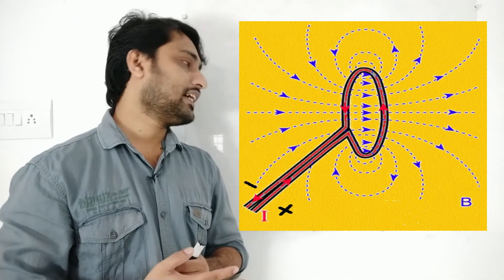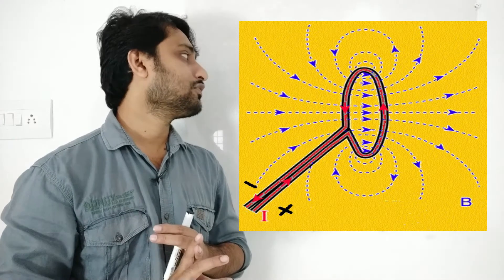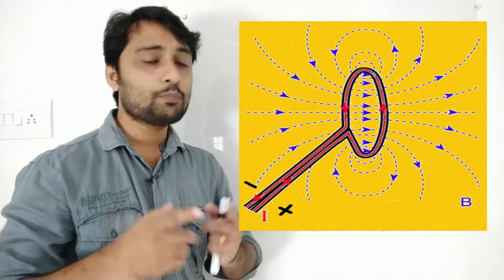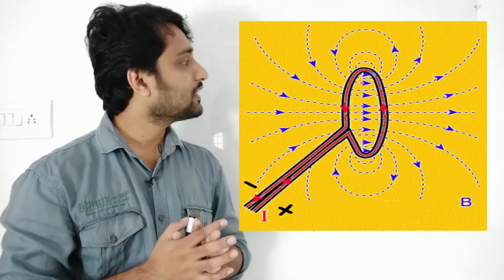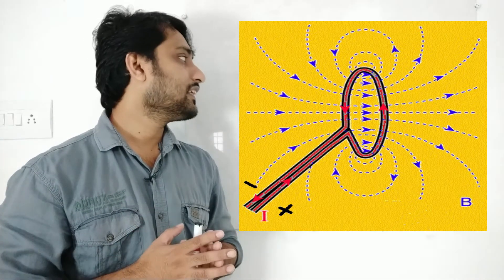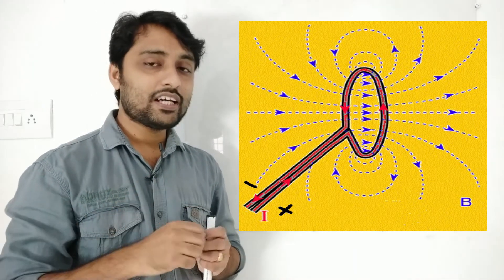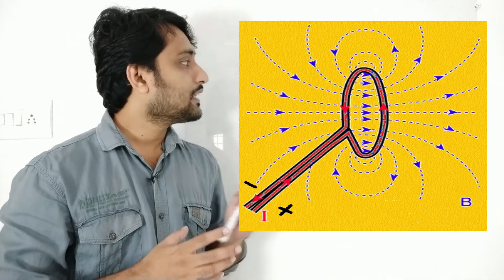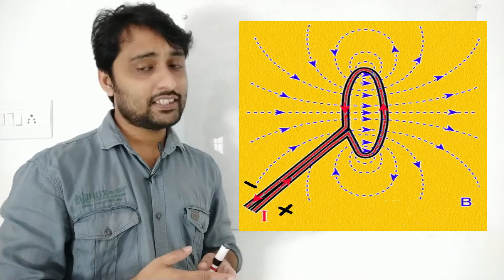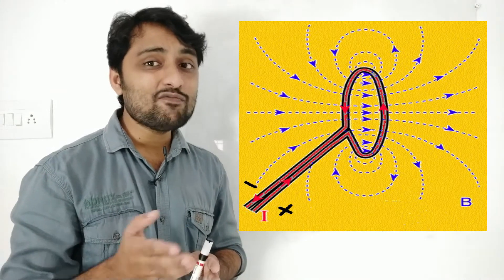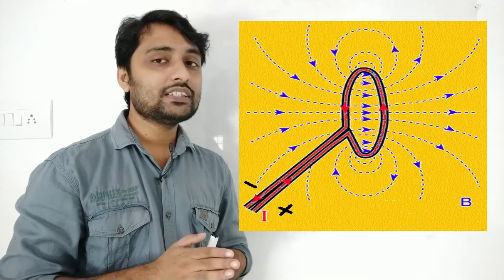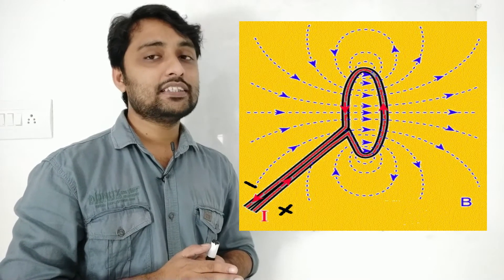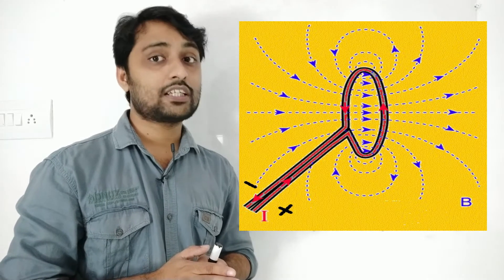Another factor is the radius of the loop. If the radius is increasing — that means the size of the loop is larger — without changing the intensity of the current, the magnetic lines of force at the center become less. So the radius of the loop is inversely proportional to the magnetic field in a circular loop conductor.